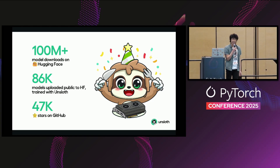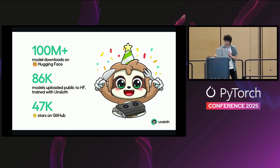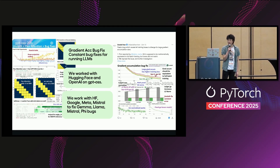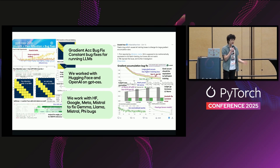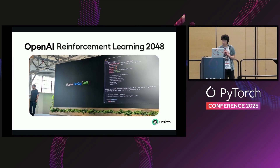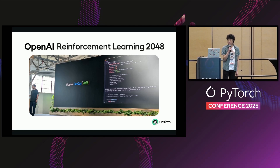We have around 86,000 models uploaded to HuggingFace trained using Unsloth for RL and fine-tuning, and around 47k GitHub stars. We also help fix bugs in training and open source models — for example, we introduced a gradient accumulation bug fix which affected training losses. We work with Google, Meta, Mistral, and many other large labs to fix bugs in open source models.